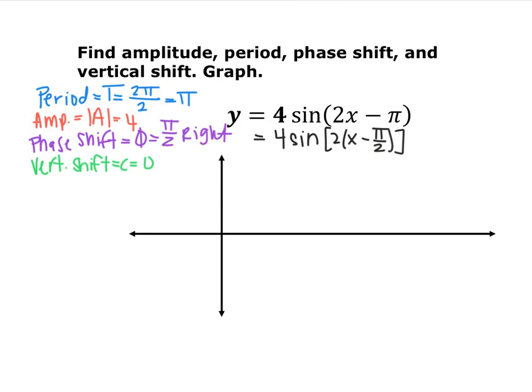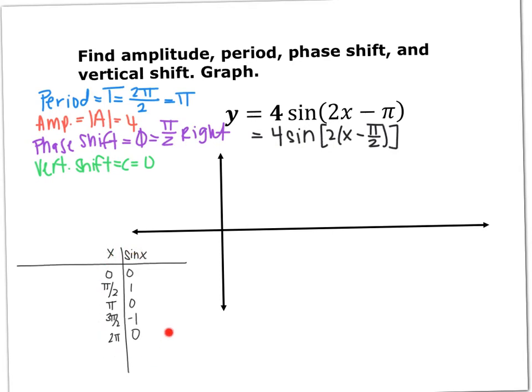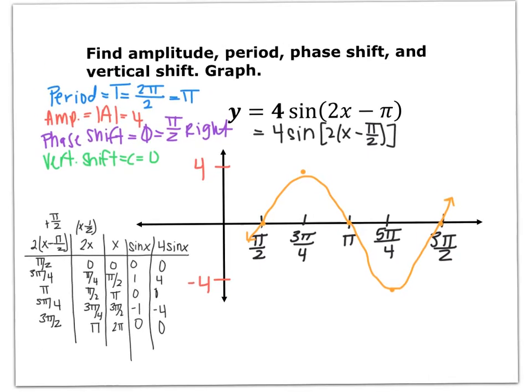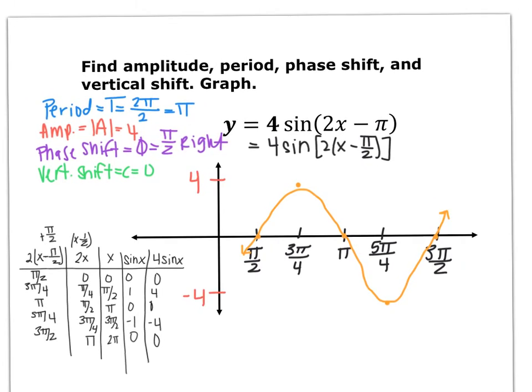You can graph these using the tables we've done for all our other transformations, using the anchor points we talked about in section 5.4. Down here we have the anchor points for sine of x. Go ahead and pause the video and either complete the table using the transformations, or just do your transformations step by step and graph the function y equals 4 sine of 2x minus π. Here we have the graph and the table representing all the transformations, showing what one period of this function looks like.